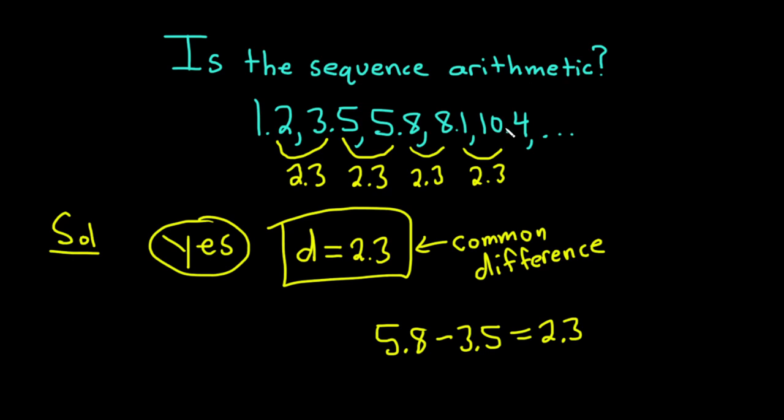And you could do that for any of them. You can do 10.4 minus 8.1. Let's just check. That's also going to give you 2.3.